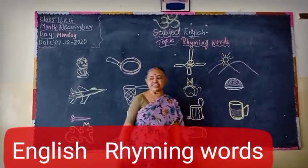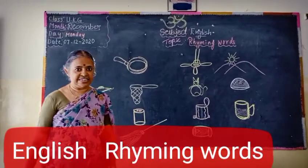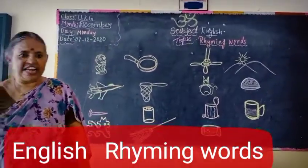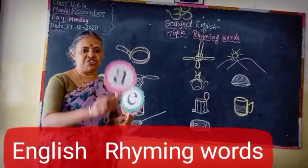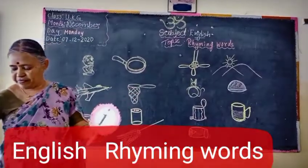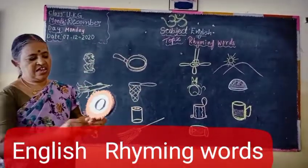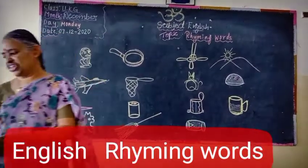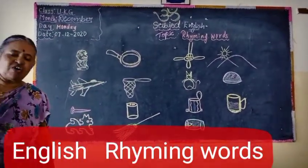Rhyming words are the name. We have learnt the vowels, children. We can recall the vowels: A, E, I, O, and U. There are 5 vowels, children, and 21 consonants.